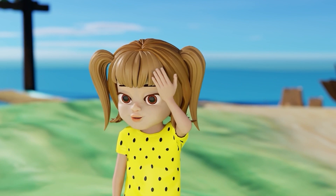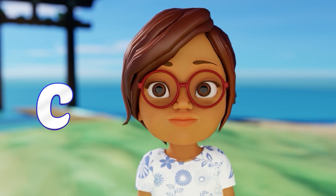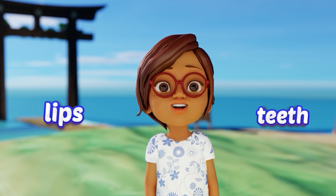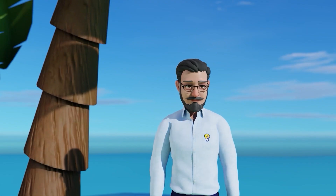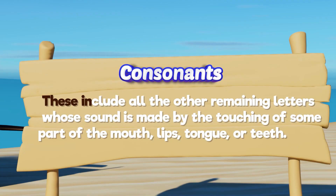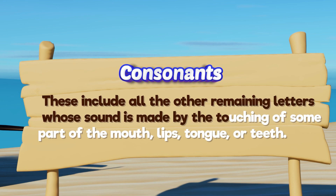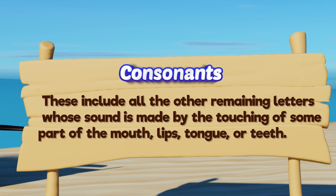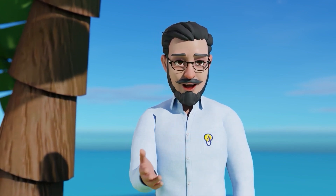B, C, D. And yes, when I speak these letters, my lips or teeth touch each other. This is fun. What are these letters called? These are called consonants. These include all the other remaining letters whose sound is made by the touching of some part of the mouth — lips, tongue, or teeth. A consonant sound is produced by blocking air flowing out of the mouth.